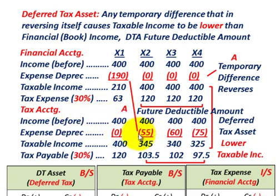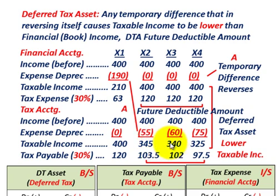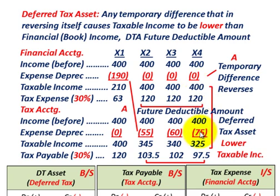Now for tax accounting, this is where the temporary difference reverses. There's no depreciation expense in the first year, but we have expense amounts for the next three years. Subtracting $55,000 from $400,000 gives taxable income of $345,000 in year two, $340,000 in year three, and $325,000 in year four. Comparing taxable income confirms this is a deferred tax asset — taxable income is lower under tax accounting than under financial accounting.